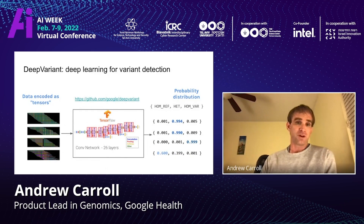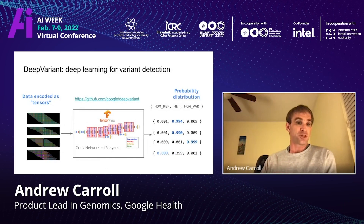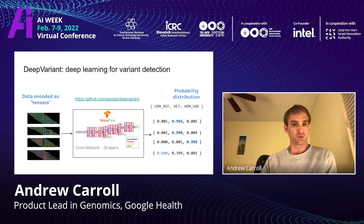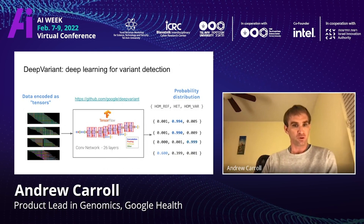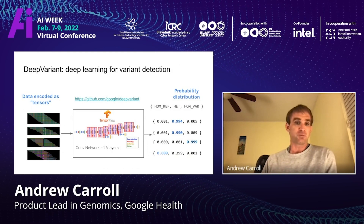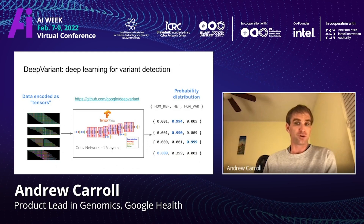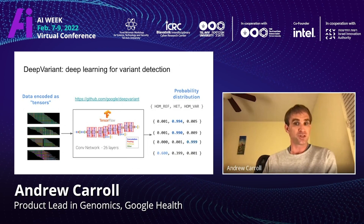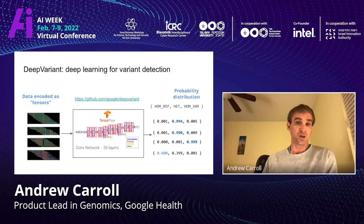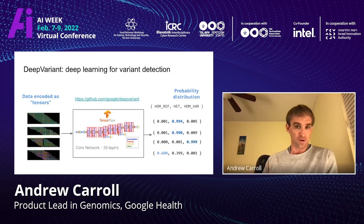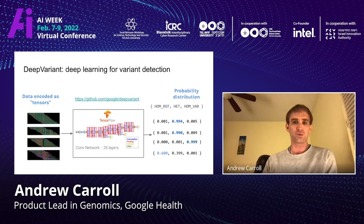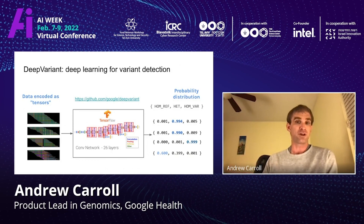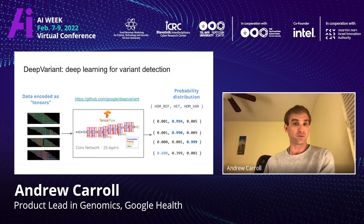DeepVariant encodes the information in a similar manner to the way a human would look at it. On the left, you see these pileup images, which represent the genome across space. DeepVariant uses an Inception V3 convolutional neural network to classify these as though they were images, with an output probability for each position — whether it has no variant (homozygous reference), whether there's one variant from one parent but not the other (heterozygous), or homozygous variant, where both copies are variant.